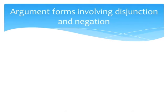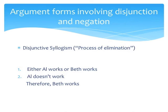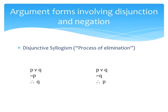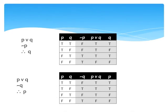Now let's test the validity of some argument forms involving disjunction and negation. There is a well-known pattern called disjunctive syllogism, also known as process of elimination. An example: one, 'either Al works or Beth works'; two, 'Al doesn't work'; therefore, 'Beth works.' We can see that this is a valid pattern of argument. The disjunctive syllogism comes in two forms: one in which we deny the left disjunct and one in which we deny the right disjunct. In any case, the result is always the same — we negate one disjunct and then conclude the other disjunct. Let's check the validity of these forms by means of a truth table.